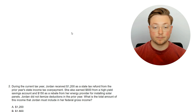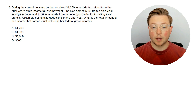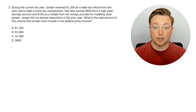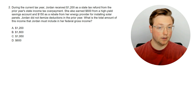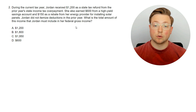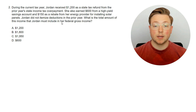Here's the next question. During the current tax year, Jordan received $1,200 as a state tax refund from the prior year's state income tax overpayment. She also earned $600 from a high yield savings account and $150 as a rebate from her energy provider for installing solar panels. Jordan did not itemize deductions in the prior year. What is the total amount of this income that Jordan must include in her federal gross income? We're still trying to learn what is tax-exempt interest and what isn't.